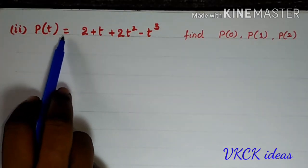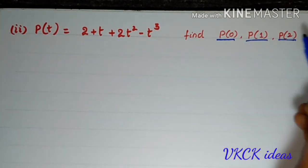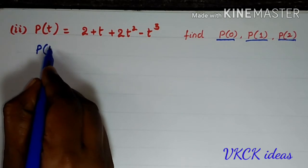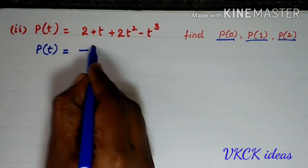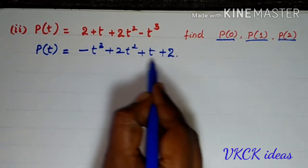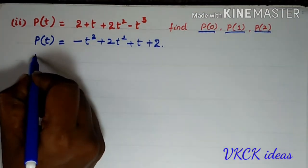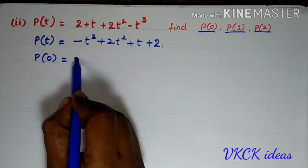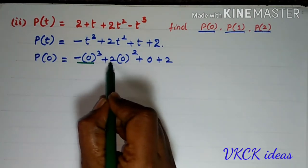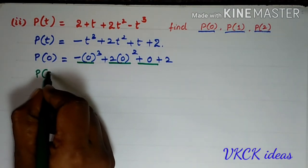The next question is p(t) = 2 + t + 2t² - t³. Here also, you have to find p(0), p(1), and p(2). Before substituting, we will rearrange the polynomial: -t³ + 2t² + t + 2. It is not compulsory to arrange it, but it is good discipline to do so. For p(0), replacing t by 0: -(0³) + 2(0²) + 0 + 2. All the t-terms are 0, so p(0) = 2.